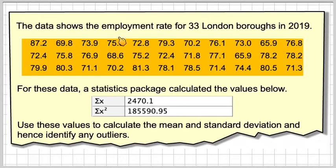The data shows the employment rate for 33 London boroughs in 2019. Here we have the data. These are percentages. For these data, a statistics package calculated the values below. Sigma X is 2,470.1 and Sigma X squared is 185,590.95. Use these values to calculate the mean and standard deviation and hence identify any outliers.